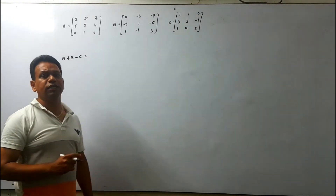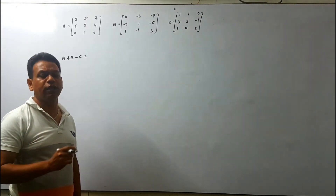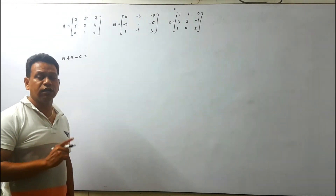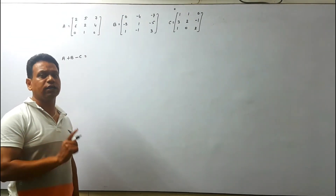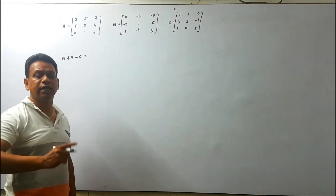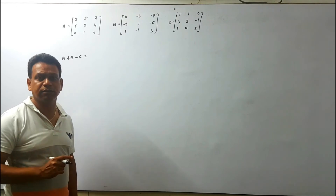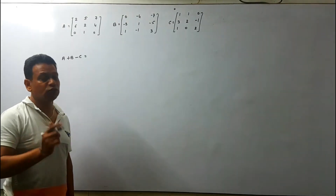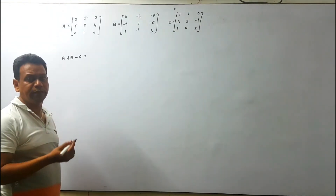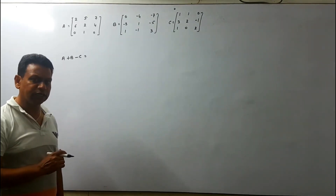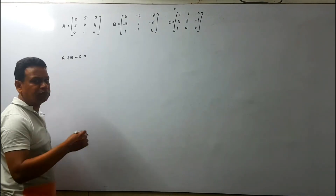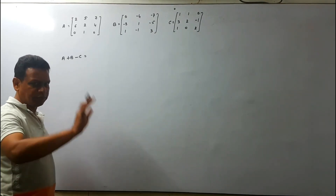As per our discussion, the most important thing to verify is that the orders of the matrices must be the same. Since all three are 3 by 3 matrices, we are able to perform addition and subtraction. Now let us try this.